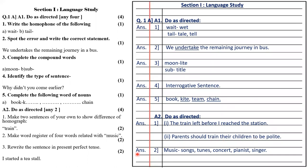Next question is make a word register of four words related to music: music, songs, tunes, concert, pianist, singer. You can add as many words as you want related to music.